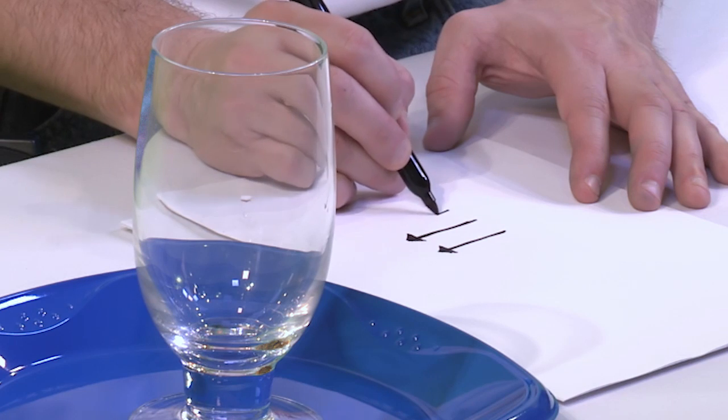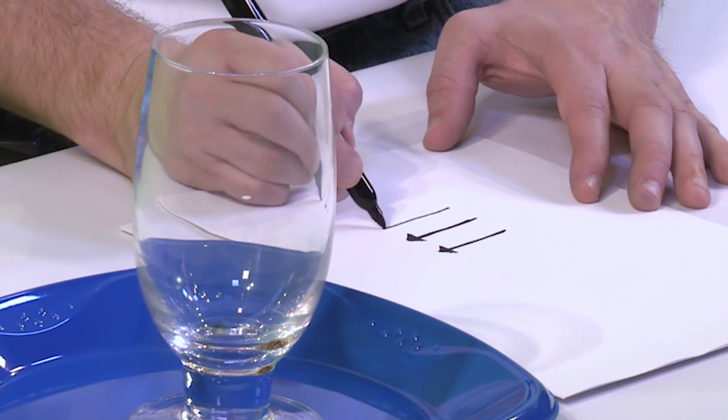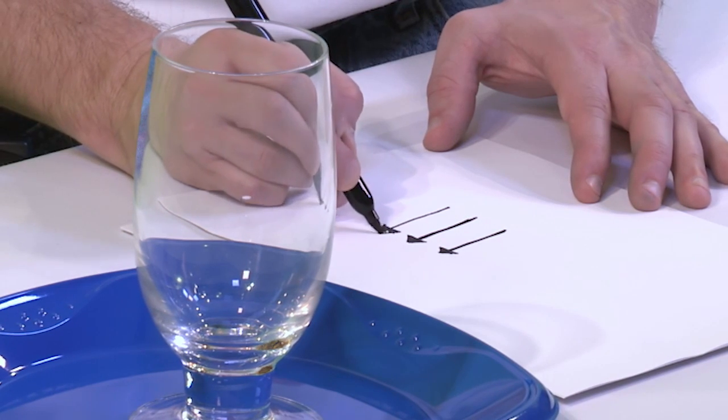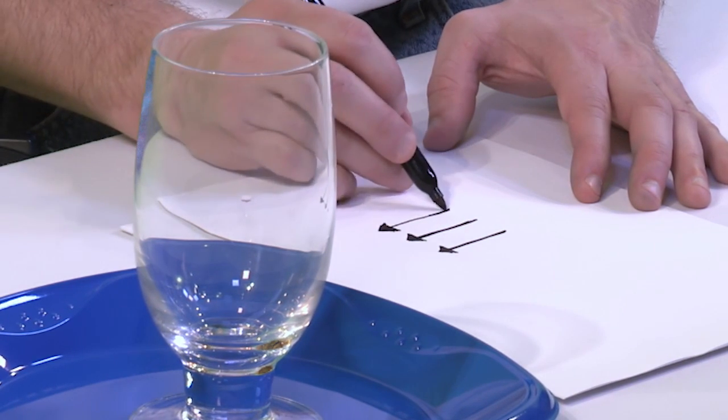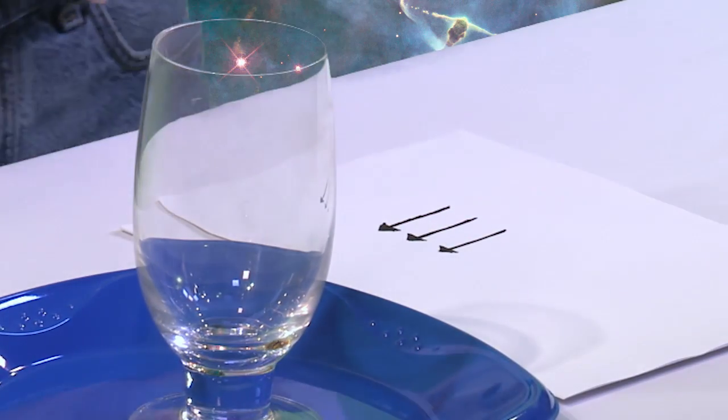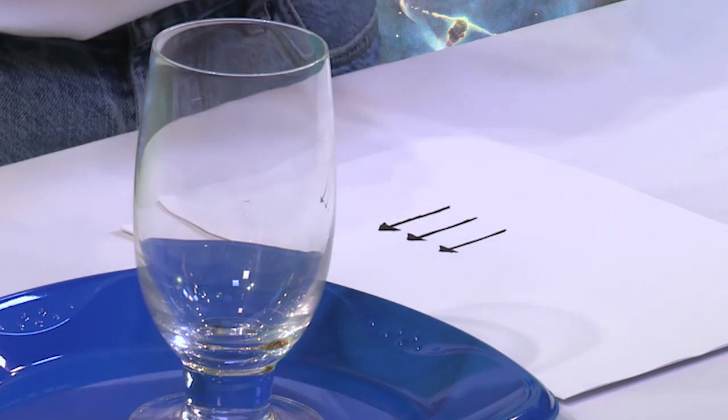And then I'm going to do a third one directly underneath it, just to make sure we have enough where we can easily see what's going on. The reason I'm drawing arrows is because the bending we're going to do is basically going to reverse the direction of these arrows. So it's going to be nice to be able to see what direction the arrows point.